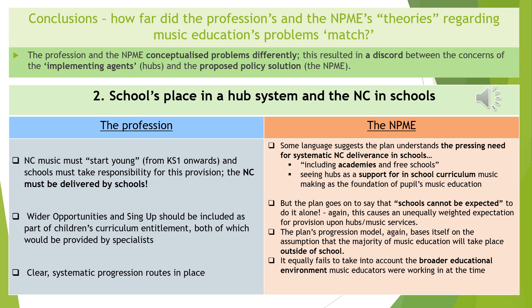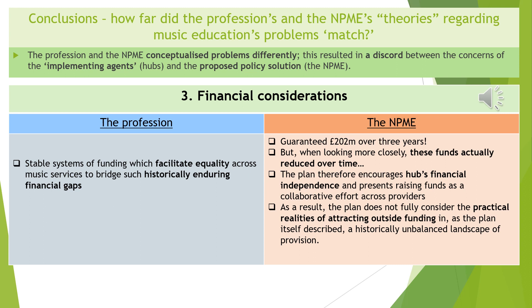Finally, regarding financial considerations: the profession wanted a stable system of funding to ensure equality across the country where historical funding issues had produced unequal provision. The plan guaranteed over £200 million for hubs over three years, which sounds great; however, this actually reduced year on year. The plan encouraged hubs' financial independence and presented raising funds as a collaborative effort to make up the shortfall, but did not fully consider the practical realities of attracting such funding in a historically unbalanced landscape of provision.